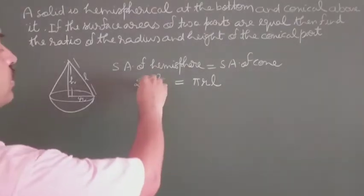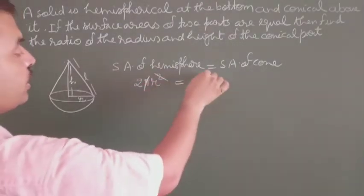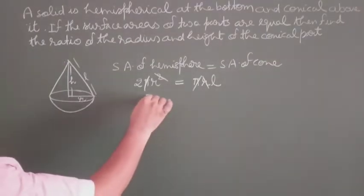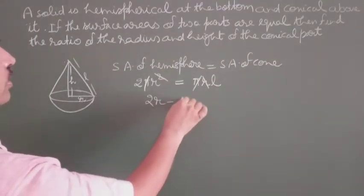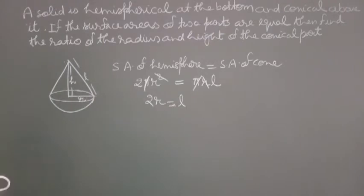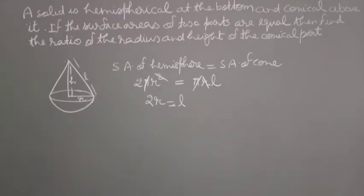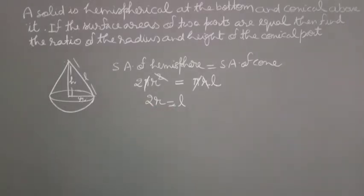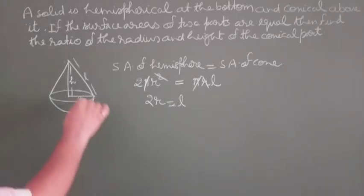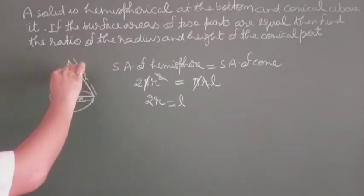So now π and π cancel. One r and one r cancel because both bases are the same. So we get 2r equals l. We have to find the ratio of radius and height of the conical part — radius r and height of the conical part h.